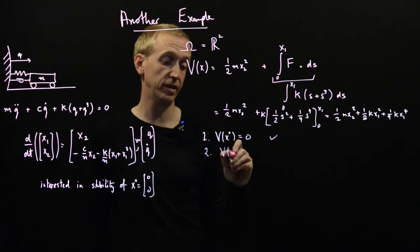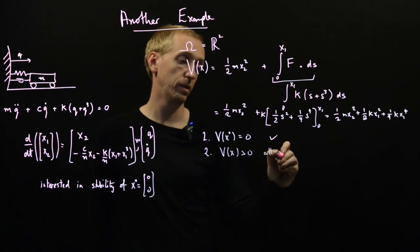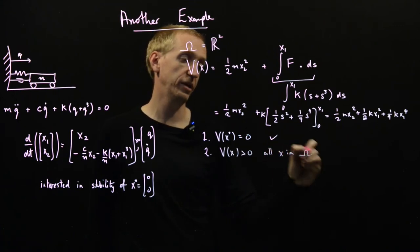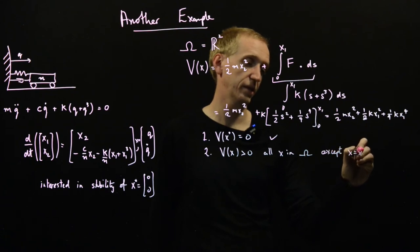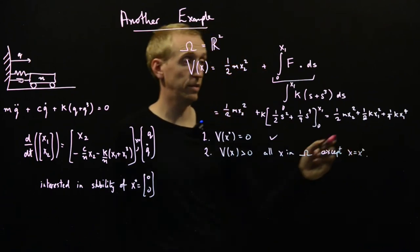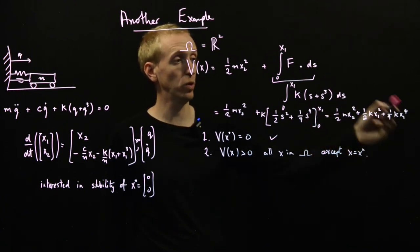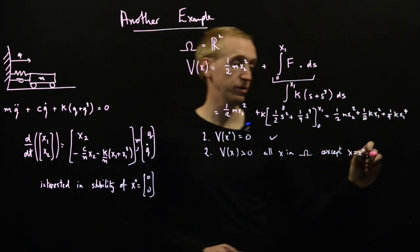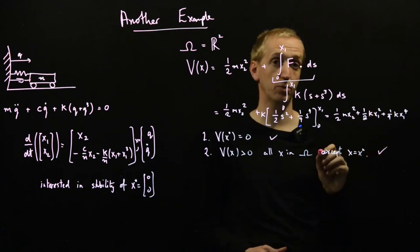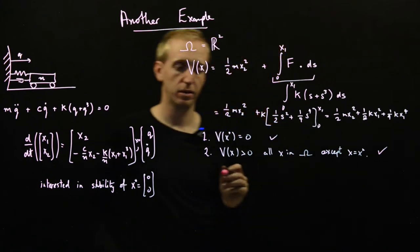Two, the next thing we need is that V(x) is bigger than 0 for all x in our region omega except x equal to x star. So if we put any value of x1 that's not 0 and x2 not 0, this thing is always positive. We've got squares or powers of 4. These functions are always positive. So this is always true except when we put x1 equal to 0 and x2 equal to 0, which is our equilibrium point. Great.